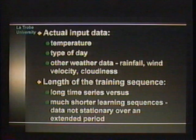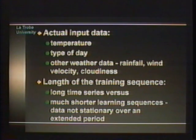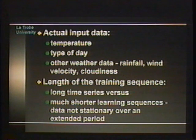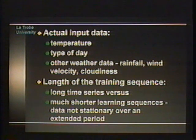The type of input data used for short-term load forecasting includes temperature — today's temperature or temperature for the previous three days, and maximum temperature. Another important input is the type of day: whether it's a weekday, beginning of the week, end of the week, or weekend. A third important type is weather data: rainfall, wind velocity, and cloudiness. All of this affects how consumers use electricity and therefore the actual load generated.